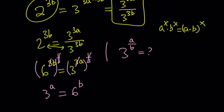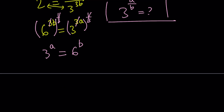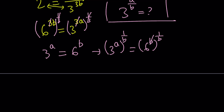We're looking for 3 to the power a over b. Just raise both sides to the power 1 over b, and that'll do the trick. We have 3 to the power a raised to 1 over b, and 6 to the power b raised to 1 over b. The b cancels out. Multiplying the exponents, a times 1 over b becomes a over b. So this becomes 3 to the power a over b, and on the right-hand side we get 6 to the power 1, which is 6.